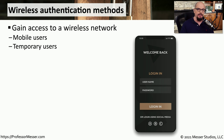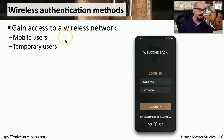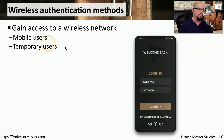When you're connecting to a wireless network, one of the first things that happens is authentication. We need some way to ensure that the people connecting to the wireless network are truly authorized to be on that wireless network. This could be a wireless network configured to allow access from mobile users, or it may be in a coffee shop where people are simply there temporarily and then leave the network.